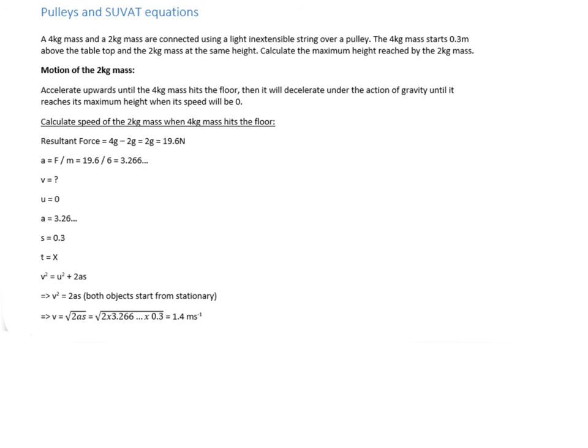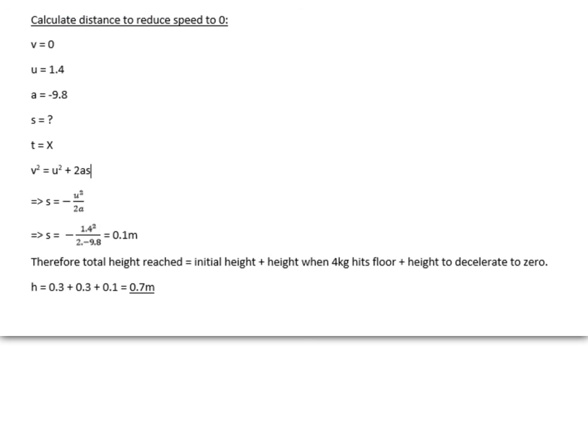So here we go. We've got this problem. On this slide, you can see we're calculating the final speed when the 4 kilogram hits the floor. Then we've got the final section where you're calculating the increase in height. We end up with 0.7 metres. And those are the types of calculations you'll end up doing when you're dealing with pulleys.